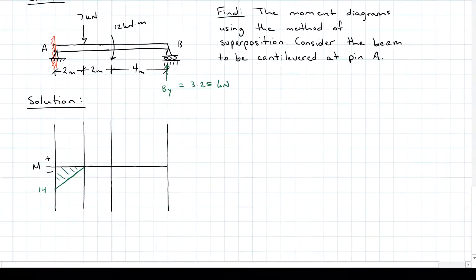Then I have my moment of 12 kilonewton meters. So I can do this a couple of different ways. I can draw a second diagram with a magnitude of 12, or I can overlap the diagram that I already have here, 12, whichever.